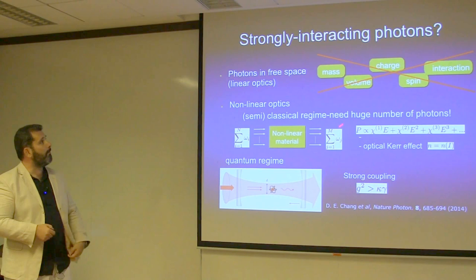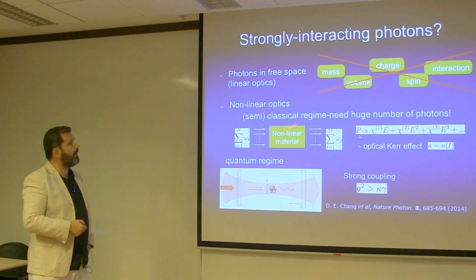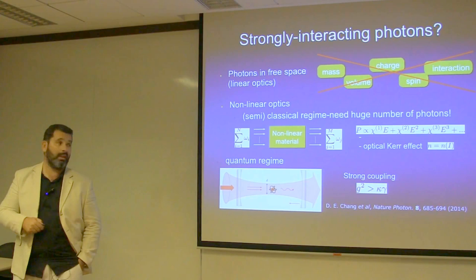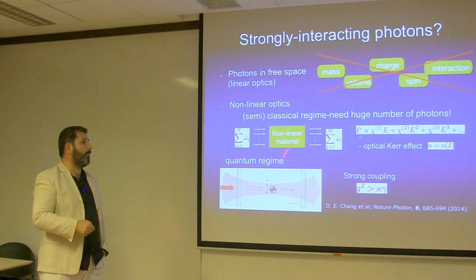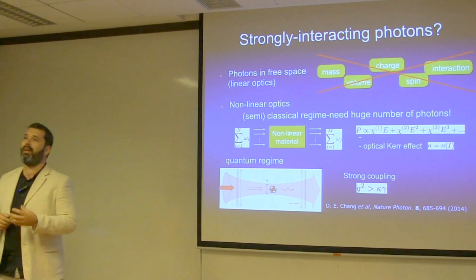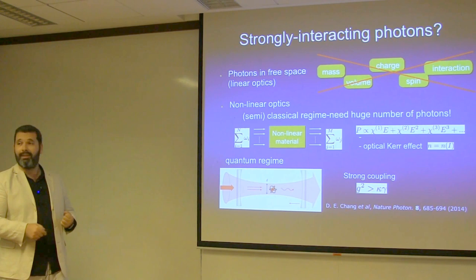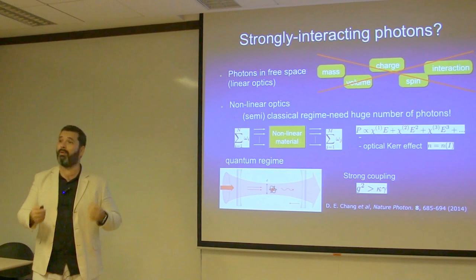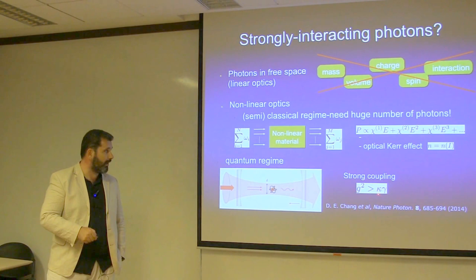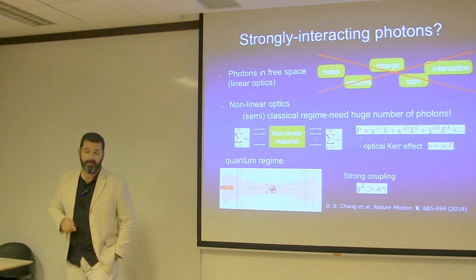To summarize: photons do not talk to each other — they don't have mass, charge, volume, or spin. You can do nonlinear optics in the traditional sense by pumping strongly nonlinear material with trillions of photons to get some nonlinearity. But if you want to go to the quantum regime and get photons to talk to each other, you have to use a mediator — usually an atom. You put the atom in a cavity: two mirrors, photons bounce back and forth. If they bounce for long times compared to how long they leak out, that gives the strong coupling regime.